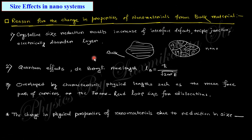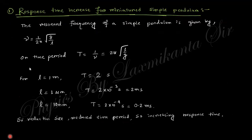Size effects in nanosystems: when the size of a material is reduced to the nanoscale, its properties change and can be exploited in different physical applications. The reduction in size increases junction imperfections and the de Broglie wavelength overlaps with characteristic physical dimensions, changing properties. For example, response time increases for miniaturized systems. For a simple pendulum, T = 2π√(L/g): if L = 1 m, T = 2 s; if L = 1 μm, T = 2 ms; if L = 10 nm, T = 0.2 ms — so reducing size reduces the period and increases response speed.